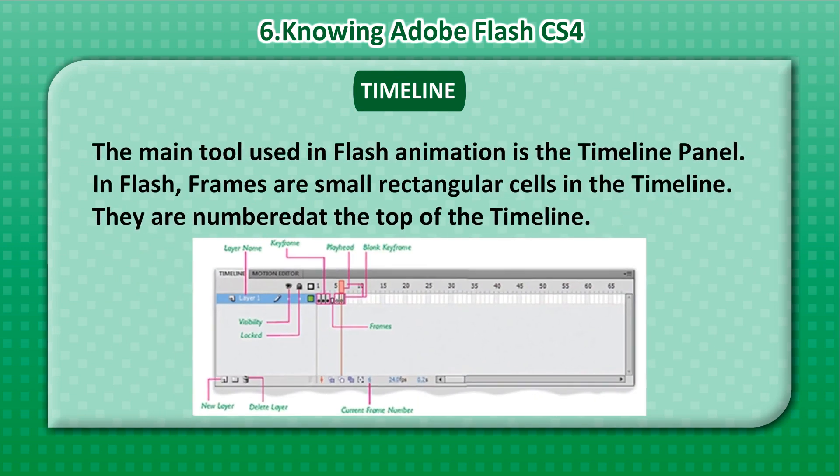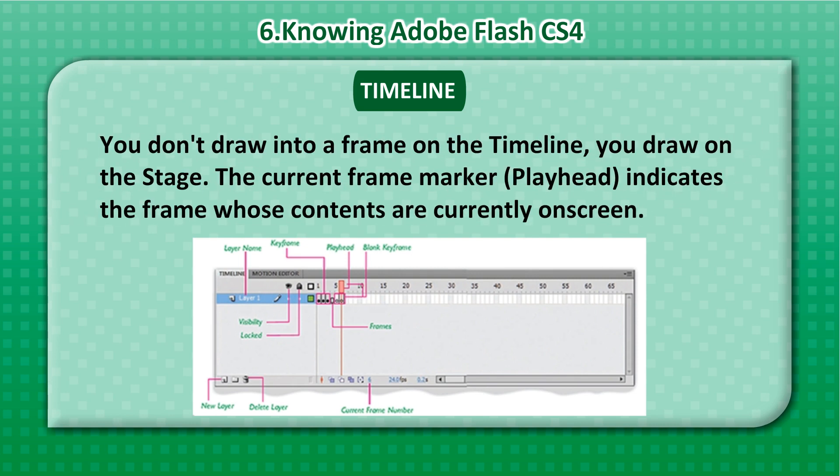Timeline: The main tool used in Flash animation is the Timeline Panel. In Flash, frames are small rectangular cells in the timeline, numbered at the top. You don't draw into a frame on the timeline — you draw on the stage. The current frame marker, called the playhead, indicates the frame whose contents are currently on screen.